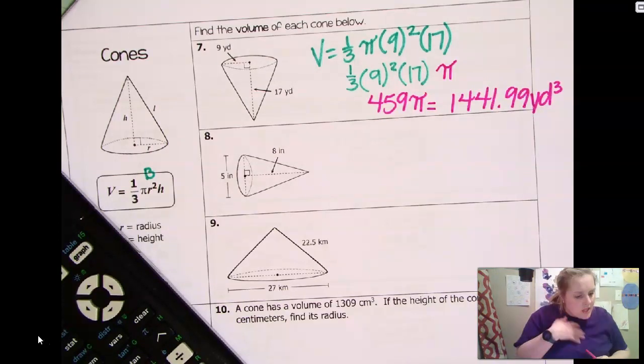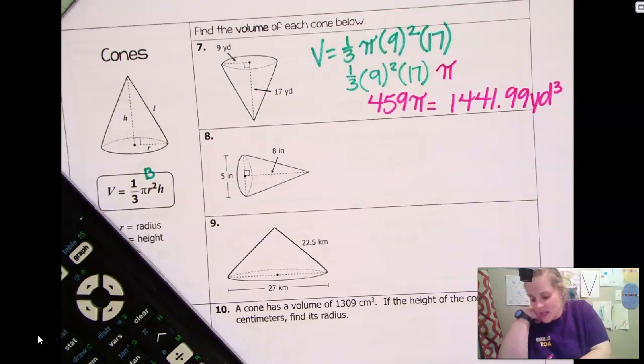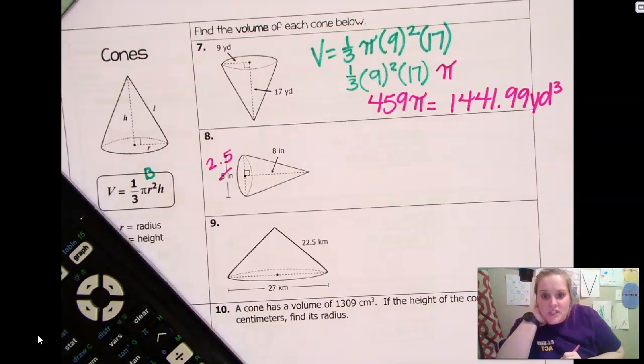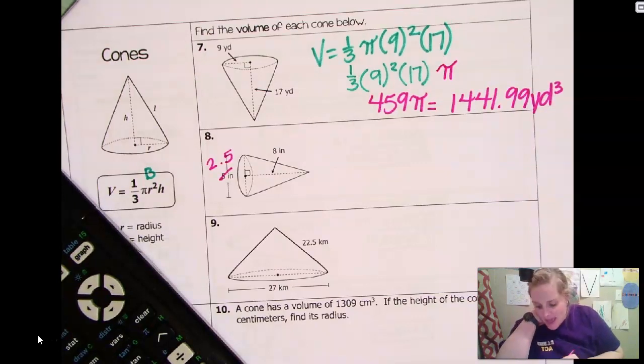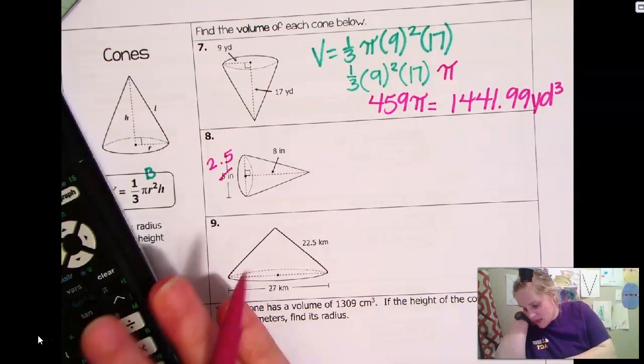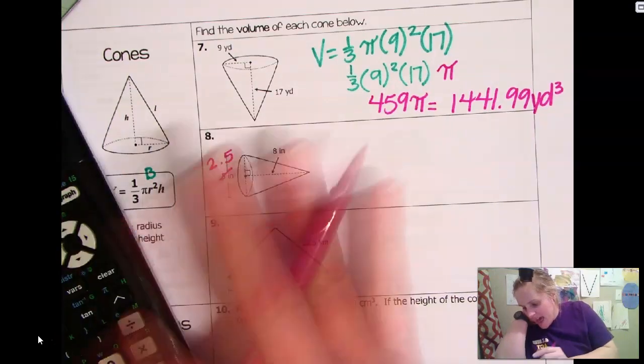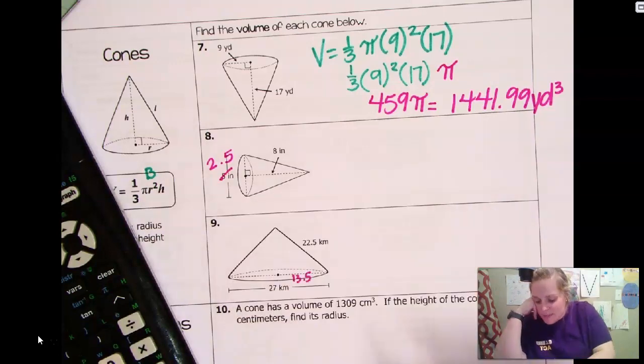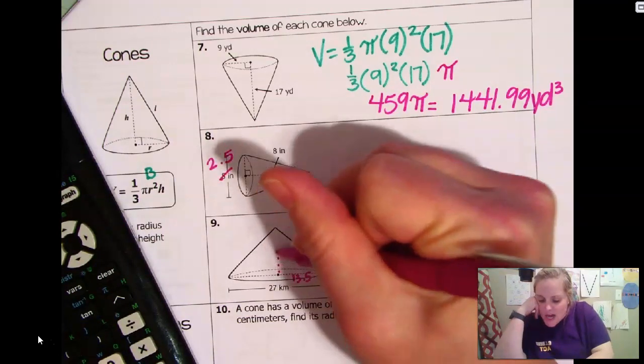Then you also have this one here. Same thing as before. You just take half of that. If they give you a diameter, you just need half of the diameter. Same thing. For this one as well, that 27, you just take that 27. You cut it in half. That's going to be 13.5 as the radius. But this one, you have to find your height. Okay?